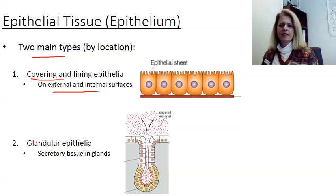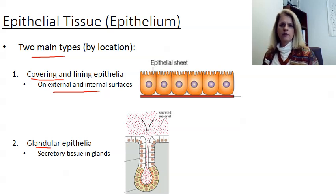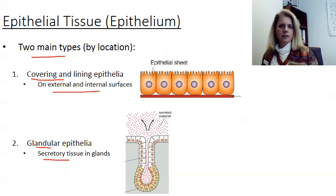The second type is the glandular epithelia. These are epithelial tissues that form glands, and they secrete things like saliva and hormones. Those are just some examples, and we'll do more specifics in the second video.